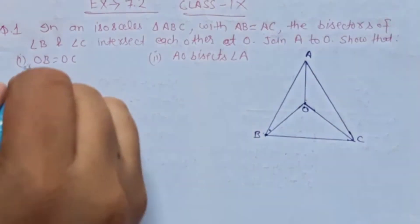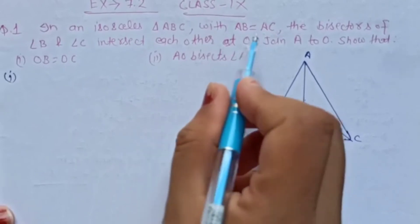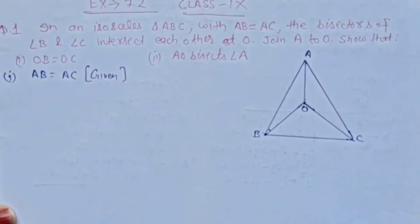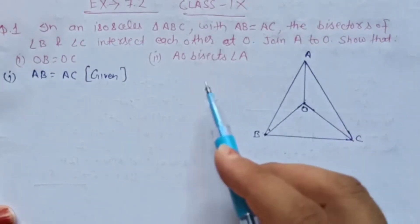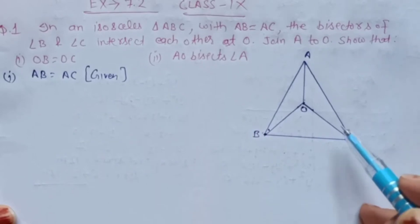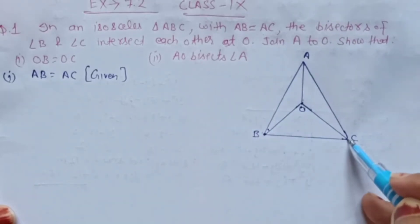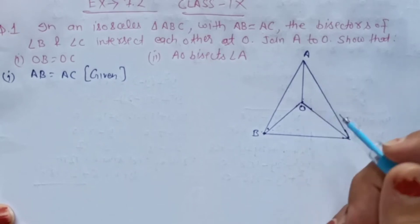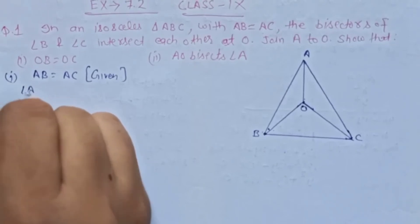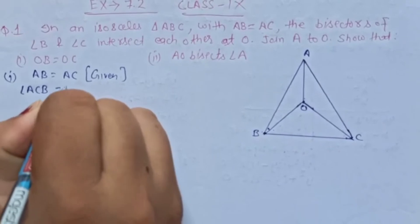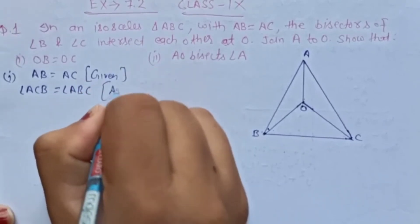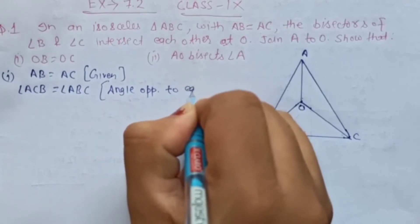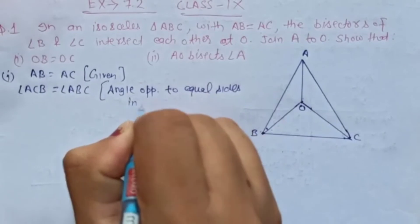So start karte hain. Sabse pehle jo given hai: AB is equal to AC, given. And second, agar AB aur AC dono equal hain, to angle in dono ke opposite angles — angle opposite to AB is angle C, aur angle opposite to AC is angle B — yeh dono equal ho jayenge. Kyunki angles opposite to equal sides are equal.